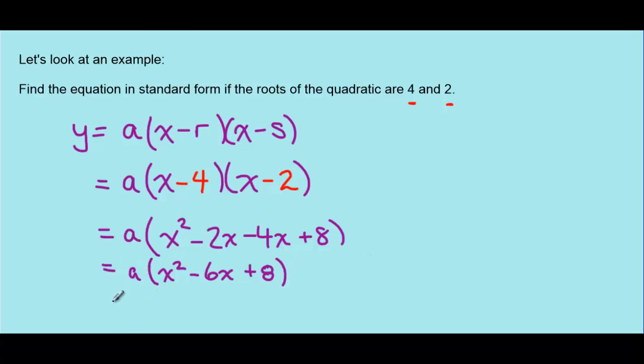And our final step here is to expand this a through the brackets. So we end up with ax squared minus 6ax - a times 6x is 6ax - and then plus 8a.